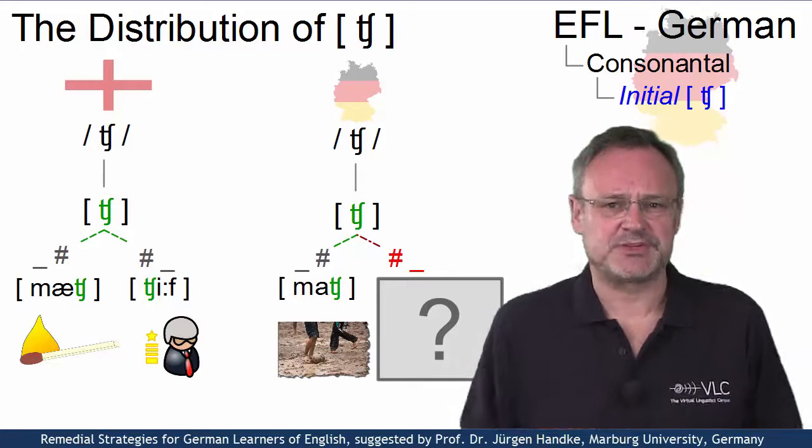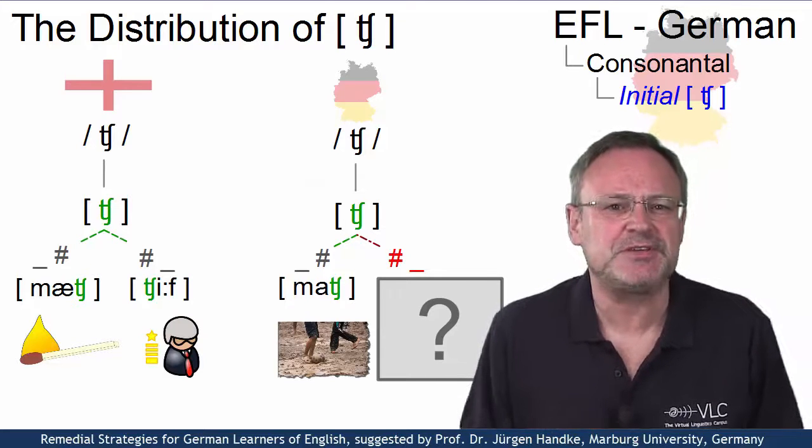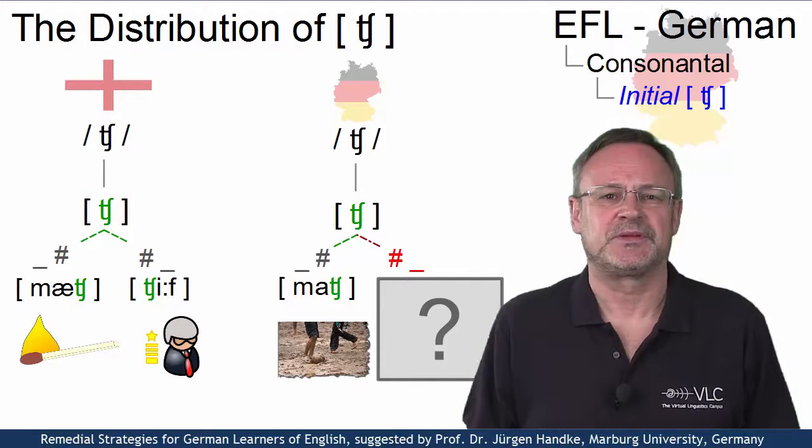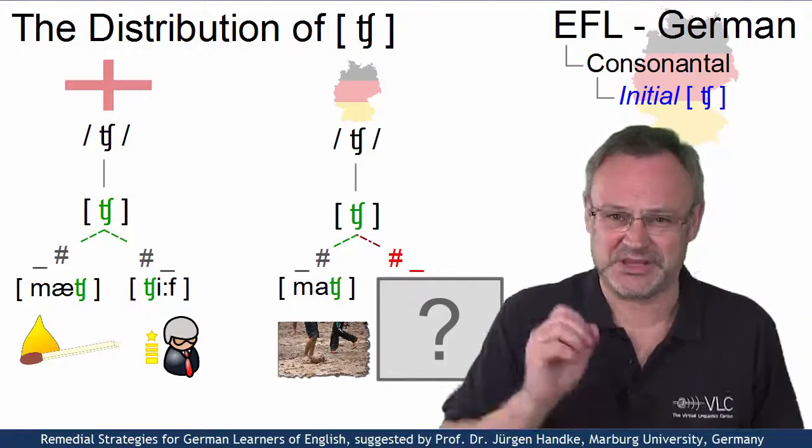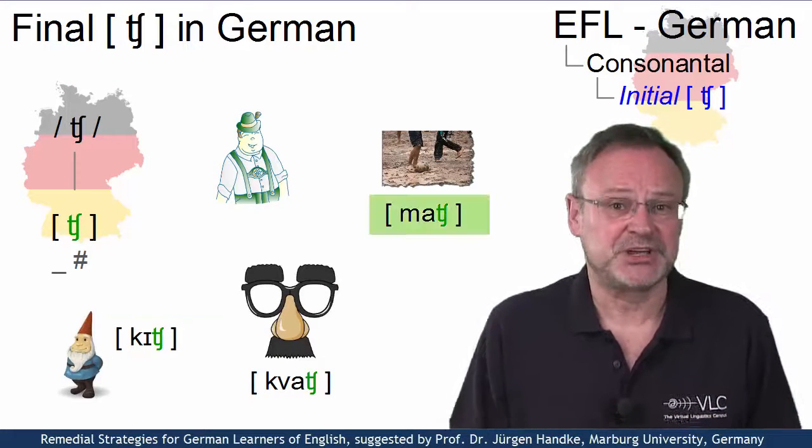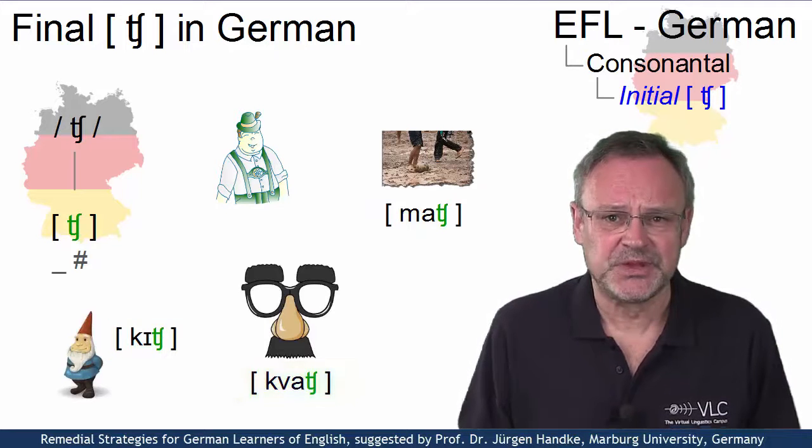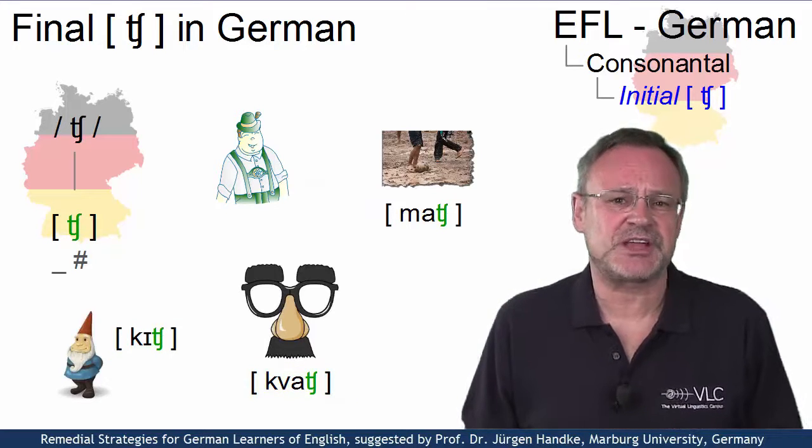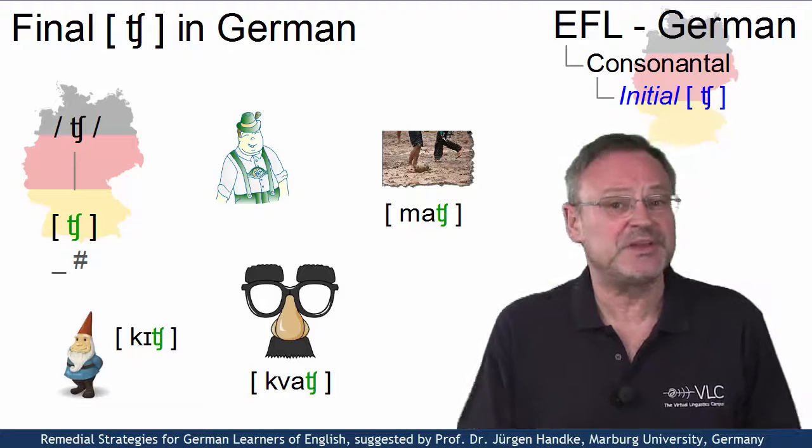How can we solve this problem and pronounce the affricate even word initially? Well, apart from the fact that we can produce [tʃ] word finally, as in much, kitsch or quatsch, we can use these German words as a starting point for words with initial ch.